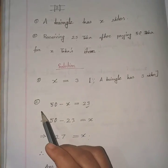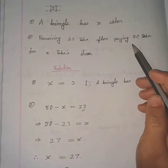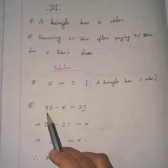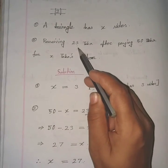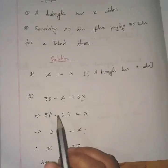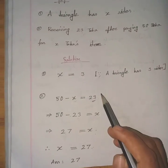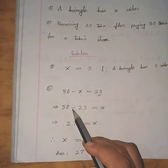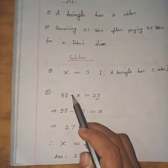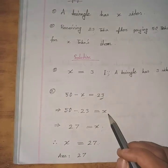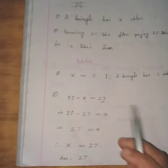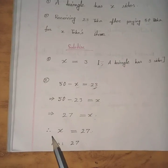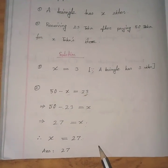For the second part: receiving 23 taka after paying 50 taka for an x-taka item. We subtract x from 50, giving 50 − x = 23. This implies 50 − 23 = x, and 50 − 23 = 27. Therefore x = 27, and hence the answer is 27.